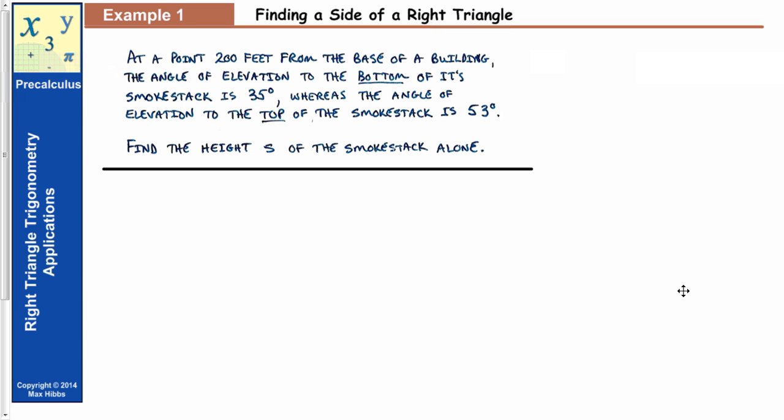We're continuing our discussion on right triangle trigonometry, specifically a set of three application problems that require dealing with a right triangle. In this first problem, we're going to need to find the side of a right triangle to solve it. This is a little more complicated than what we saw in the introduction to right triangle trigonometry.